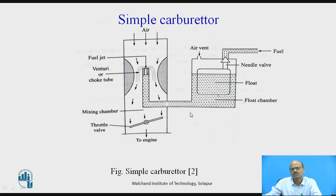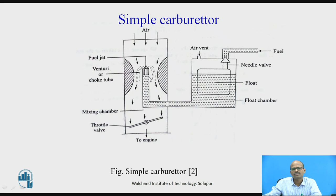This is an introduction to the simple carburetor and we have seen the working principle of the Venturimeter. You are supposed to derive the relation for finding the mass of air and mass of fuel — if you know both, you can calculate the air-fuel ratio. An important point: the nozzle tip must open at the throat itself; otherwise, the vacuum may not be enough for suction of petrol.